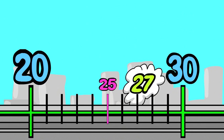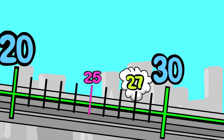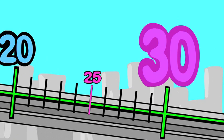27 is closer to 30 than to 20. So, to the nearest ten, 27 rounds up to 30.